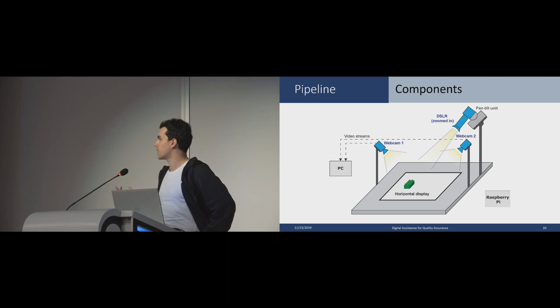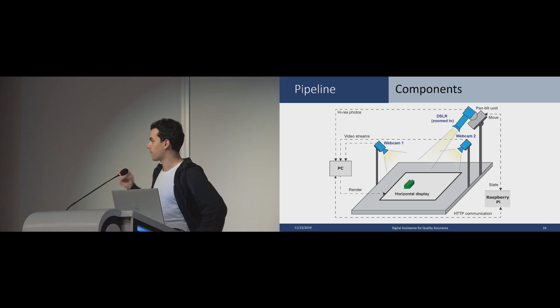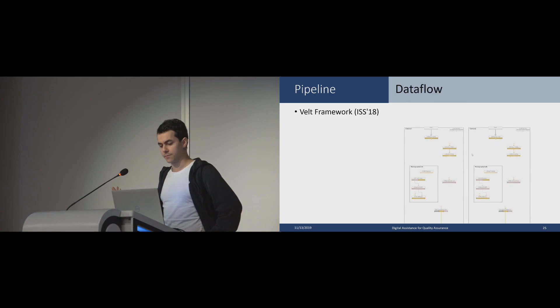Here's how they communicate. The webcams are streaming wide field of view footage to the main PC. That PC is communicating with the Raspberry Pi via HTTP. The Raspberry Pi is controlling the panel unit to rotate the DSLR towards the brick. That information is provided by the webcams. The DSLR is taking pictures at a very high resolution, which are transmitted back to the PC. In the end, we can render the instructions on the horizontal display. The overall data flow is controlled by the World Framework, which I presented last year at ISS.